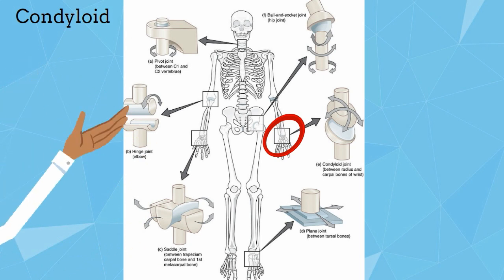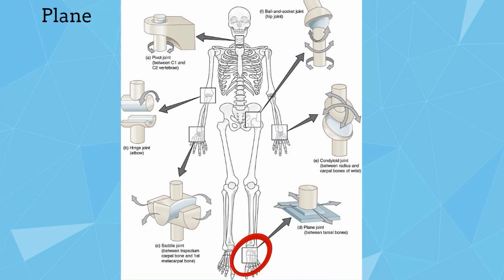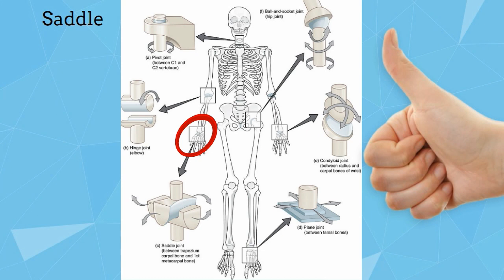Next you have a plane or gliding joint, and these are found in your feet. They allow the tarsals and the bones of your feet to glide back and forth. Your saddle joint is found at your thumb and it allows it to move across your hand, giving you an opposable thumb.